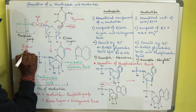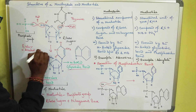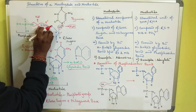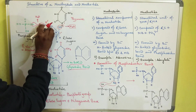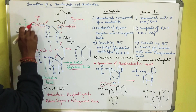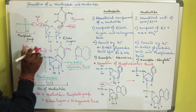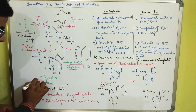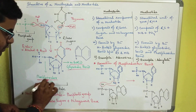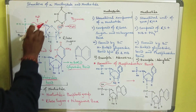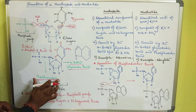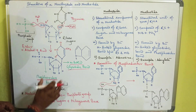An ester is formed by the reaction between an alcohol and an acid. Here the CH2OH group is an alcoholic group and the phosphate is an acid group, so an ester is formed. Because phosphate is involved, this bond is called the phosphoester bond — and more specifically, it can be called the phosphomonoester bond.